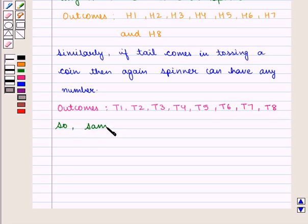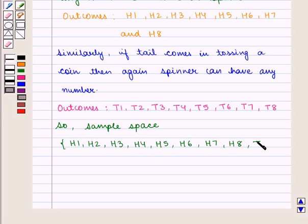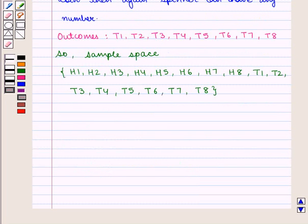So sample space would be equal to the set containing elements H1, H2, H3, H4, H5, H6, H7, H8 and T1, T2, T3, T4, T5, T6, T7 and T8. This is the required list.